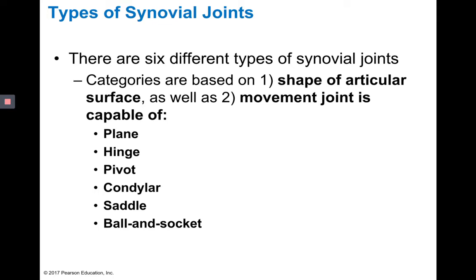Now that we've covered ranges of motion and different types of movement, let's look at the six types of synovial joints, characterized by both the shape of their articular surfaces and the movements they're capable of. Note that the six types of synovial joints are different from the structures that make up a synovial joint — pay attention to what exam questions are asking. The six types are plane joints, hinge joints, pivot joints, condyloid joints, saddle joints, and ball and socket joints.